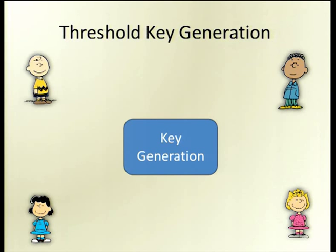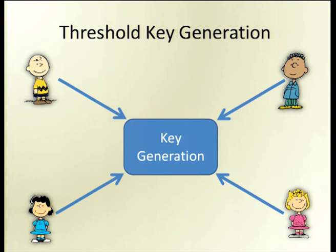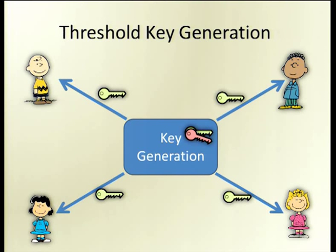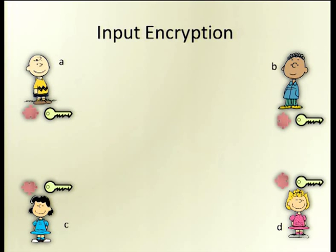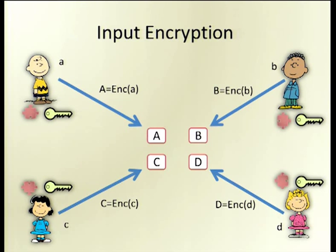The idea is to use threshold fully homomorphic encryption. Here, the key generation is now a functionality or interactive protocol and no longer just an algorithm. The parties invoke this key generation functionality, which sends back to the parties the joint public key together with a share of the secret key. So no one knows the secret key, but the information is distributed in the system. Later, each party can take its input and encrypt it under the joint public key and send it to all other parties.